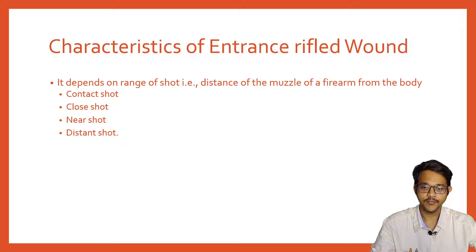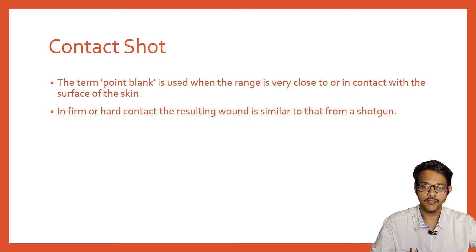The entrance wound will determine the range. The wound characteristic for entrance wound depends on the range of the shot — that is, the distance of the muzzle of the firearm from the body. It may be a contact shot, close shot, near shot, or distance shot based on how far the muzzle is from the body.